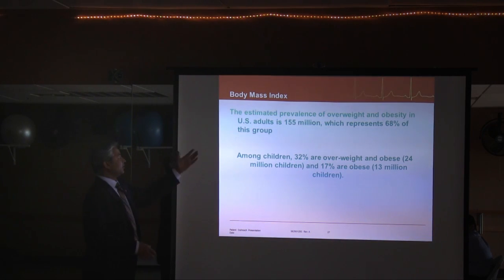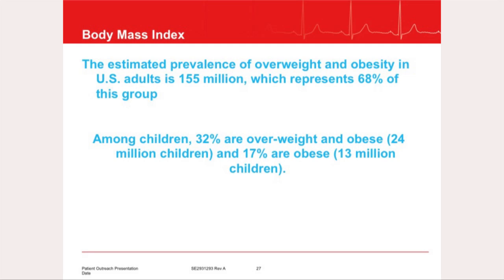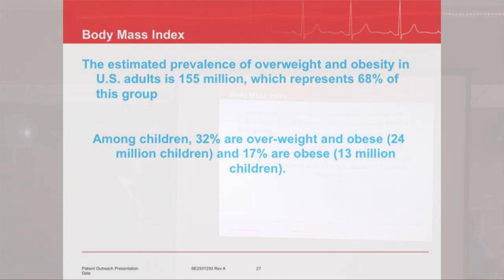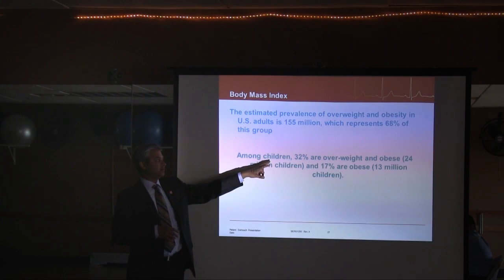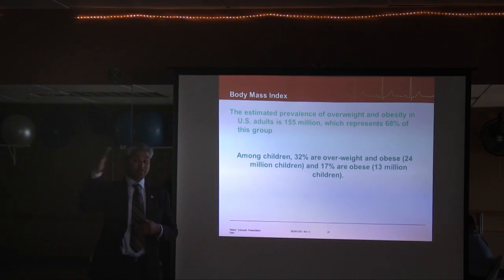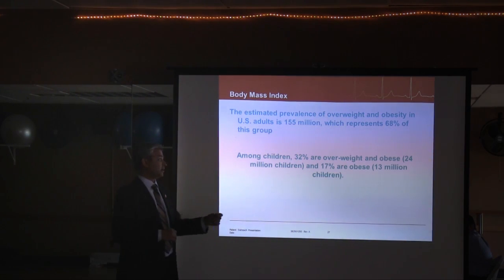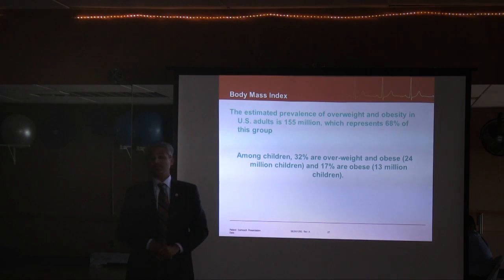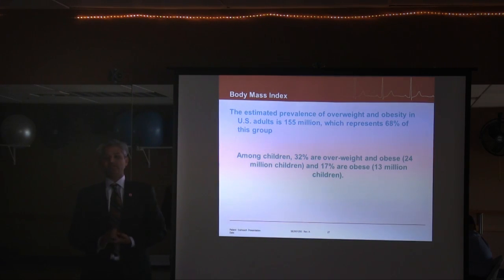The estimated prevalence of overweight and obese U.S. adults is 155 million, representing 68 percent of the population. Among children, 32 percent are overweight or obese, and 17 percent — roughly 1 in 5 children — fall into the obese category with a BMI over 30.